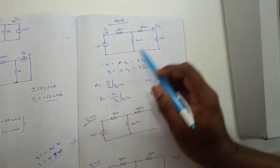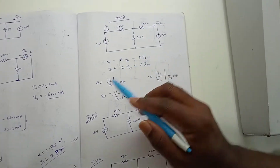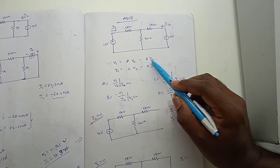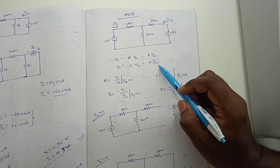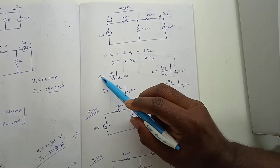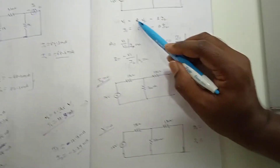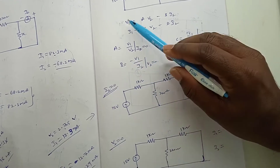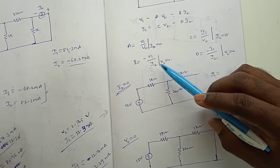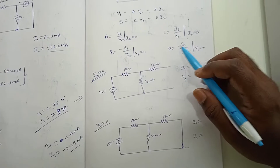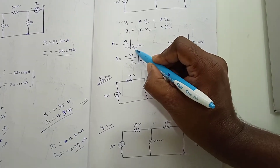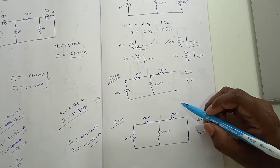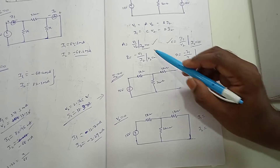These are the ABCD parameters. V1 is equal to A times V2 minus B times I2, and I1 is equal to C times V2 minus D times I2. From this, A equals V1 divided by V2 when I2 equals 0, B equals V1 divided by I2 when V2 equals 0. We will calculate A and C first, when I2 equals 0.